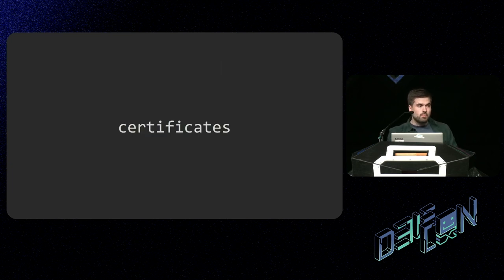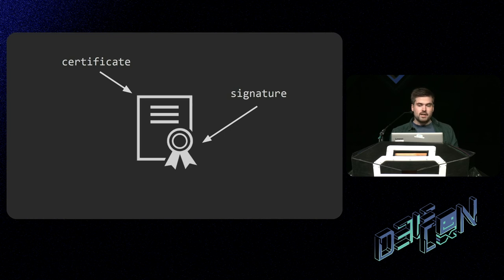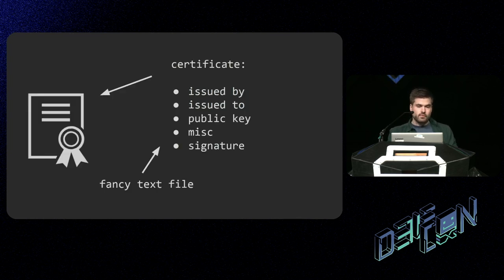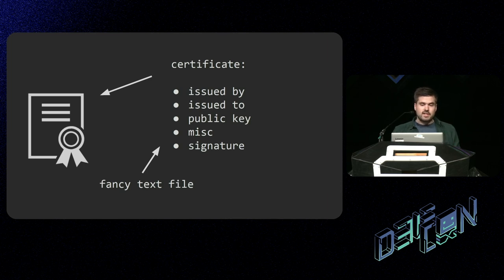These certificates — you might have heard about them or used them. They are files that have some information and a signature, basically exactly the same as your passport or physical ID. It has some information about you and a signature that says, hey, this is a valid certificate for you. In the computer world, certificates are fancy text files that have information listed inside them — issued by, issued to, public key, miscellaneous information, and a signature. A good takeaway is that they are only information inside a text file, nothing special.